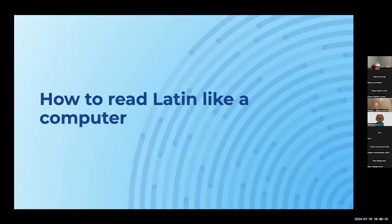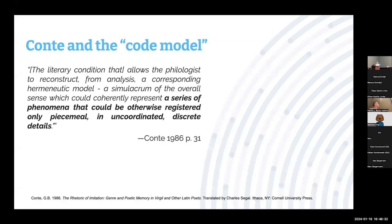I'd like to put the parts together: not just how do computers read Latin, not just how do humans read Latin, but what's the collaborative process? How do we read Latin like a computer, and how do the two inform each other? John Biagini Conti talks about how we have these poetic devices that as a reader we pick up — it's a series of phenomena that could otherwise be registered only piecemeal in uncoordinated discrete details. This gets to the point of why we have a collaborative process between computer and human: as we read text as a human, we will, as Hoyos says, pick up those groupings, and as McCaffrey says, figure out which words tend to disambiguate from others.